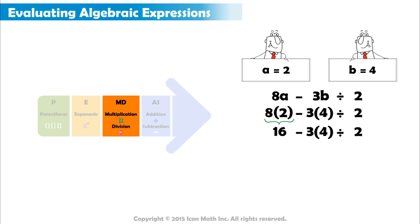Next, we have 3 multiplied by 4, and that equals 12. Now we can divide. 12 divided by 2 equals 6.